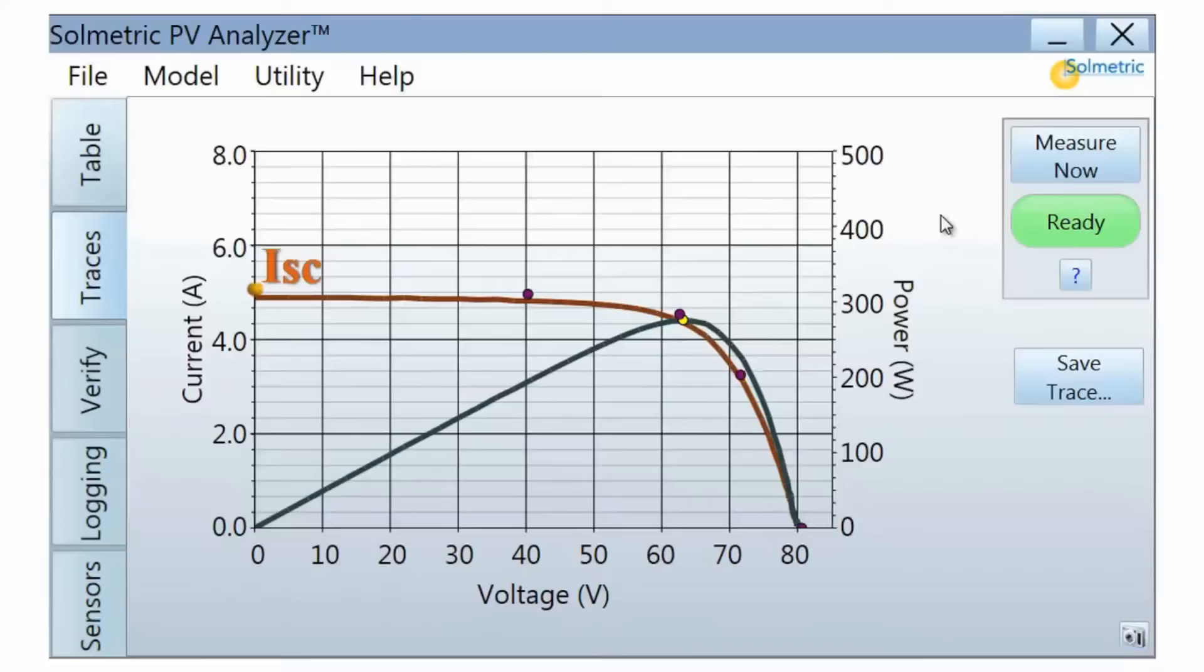The first dot is the predicted short circuit current. The third or middle dot is the predicted maximum power point. The fifth or last dot is the predicted open circuit voltage. Two additional dots are also provided to further define the shape of the predicted curve.